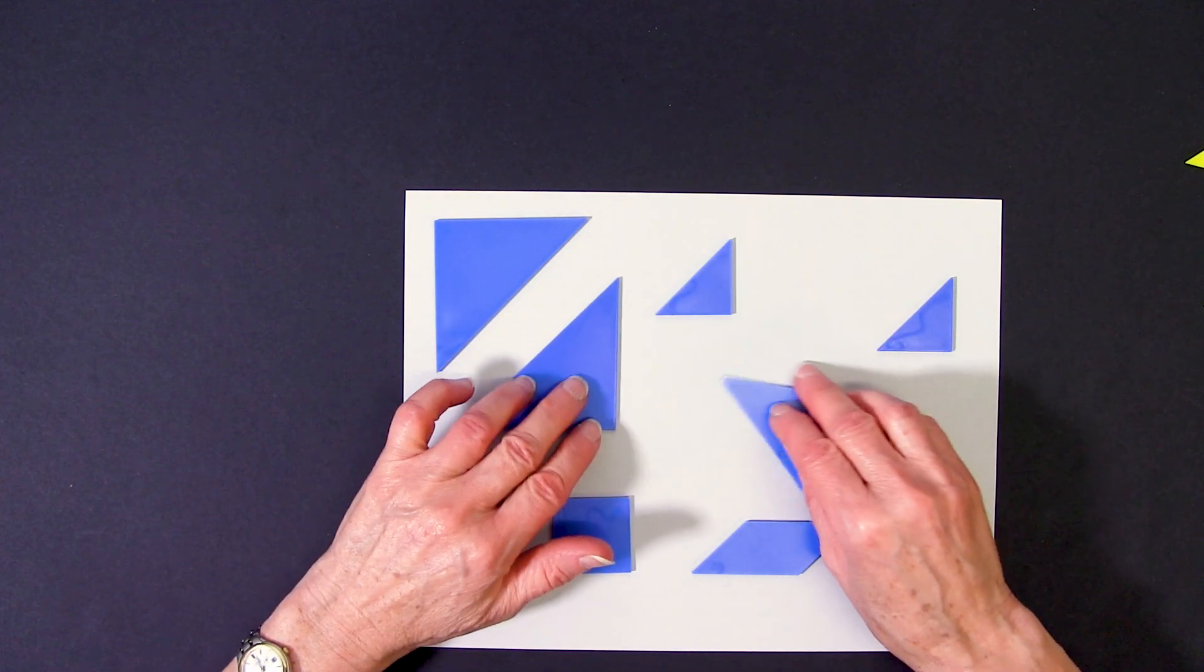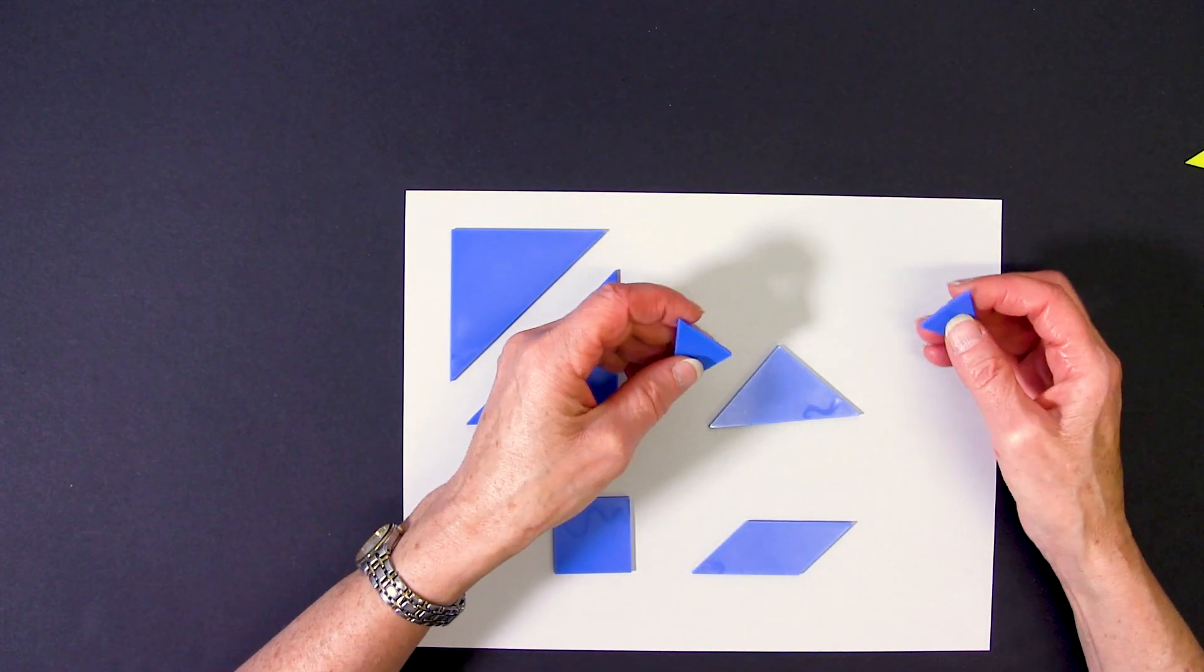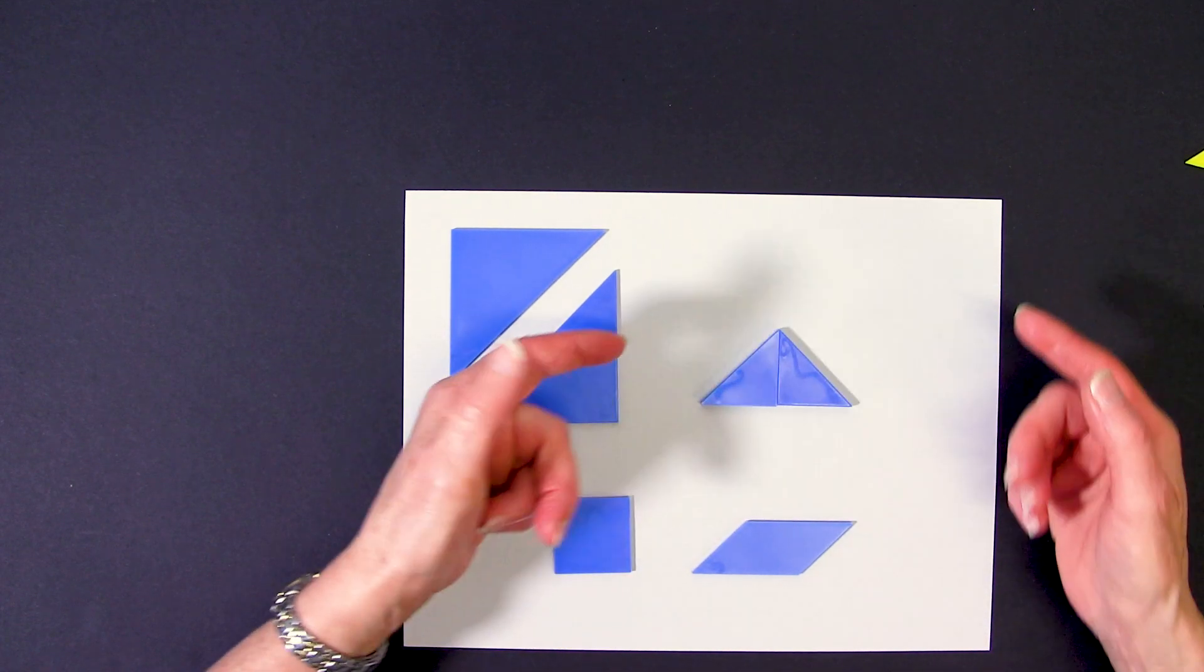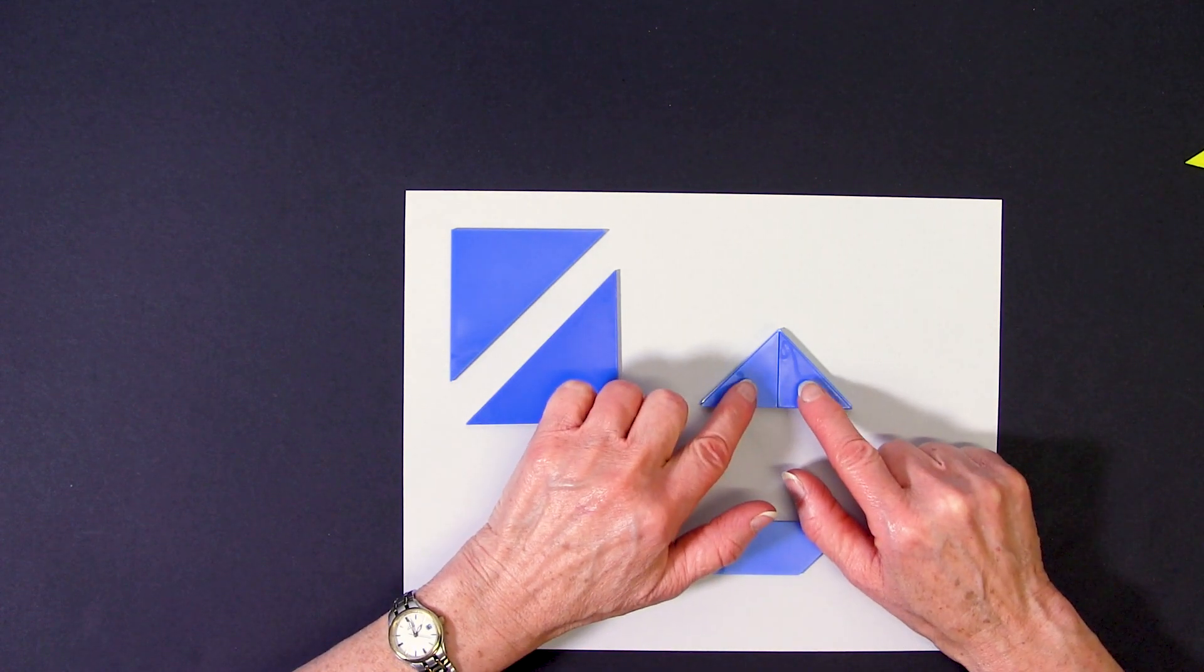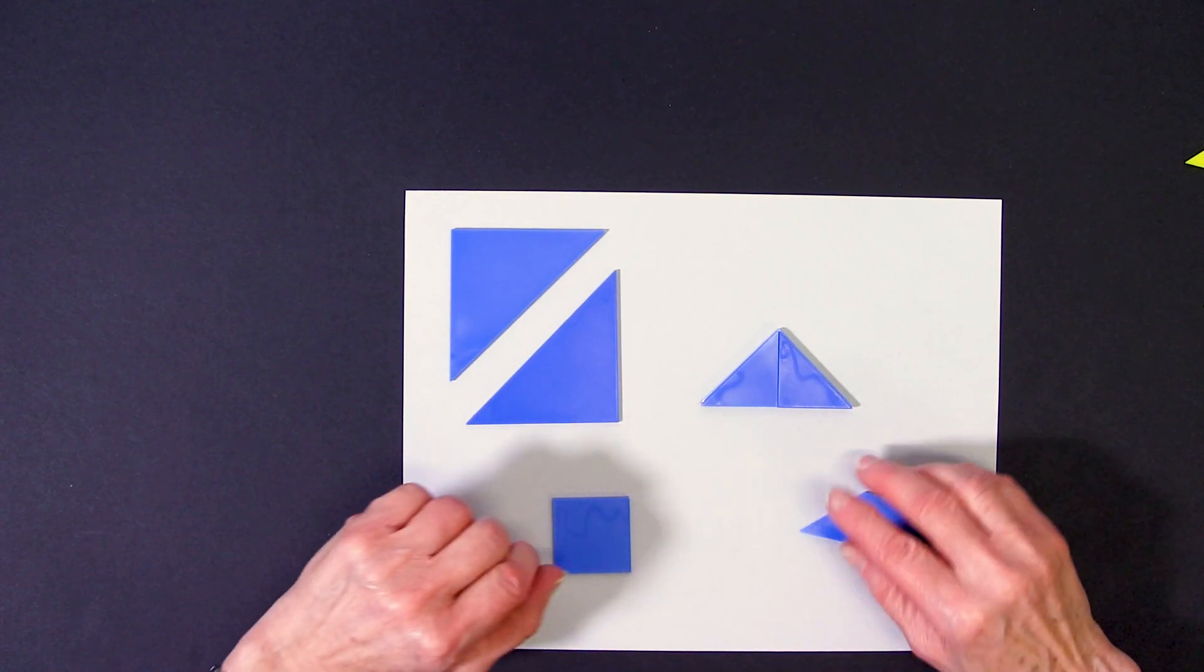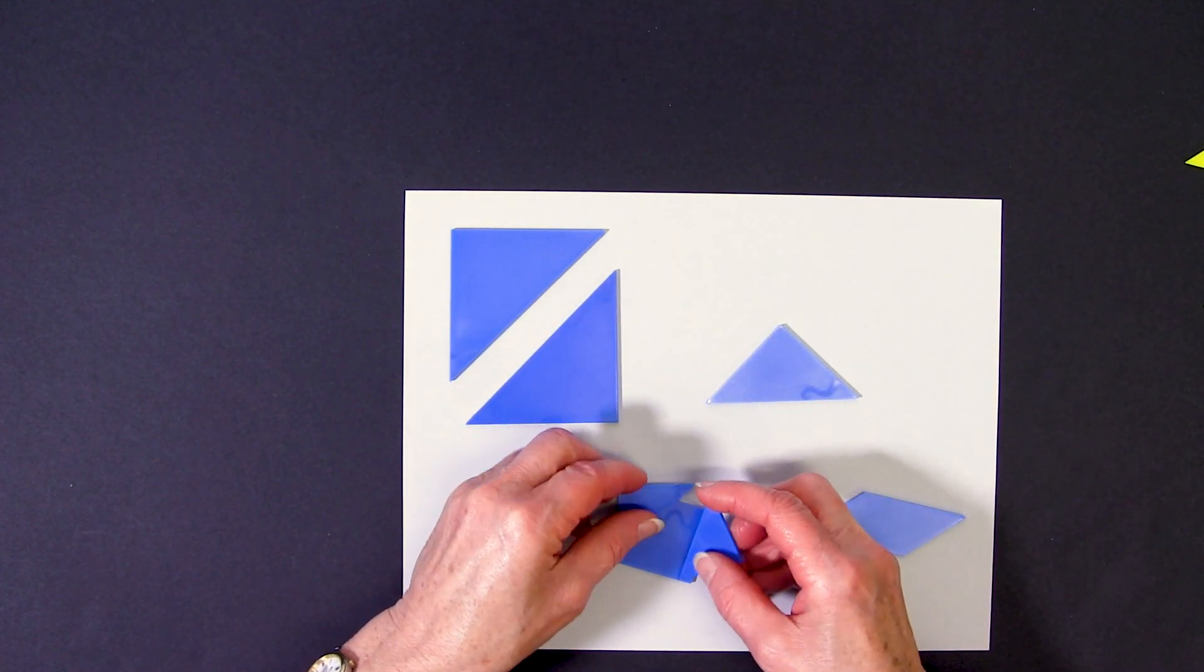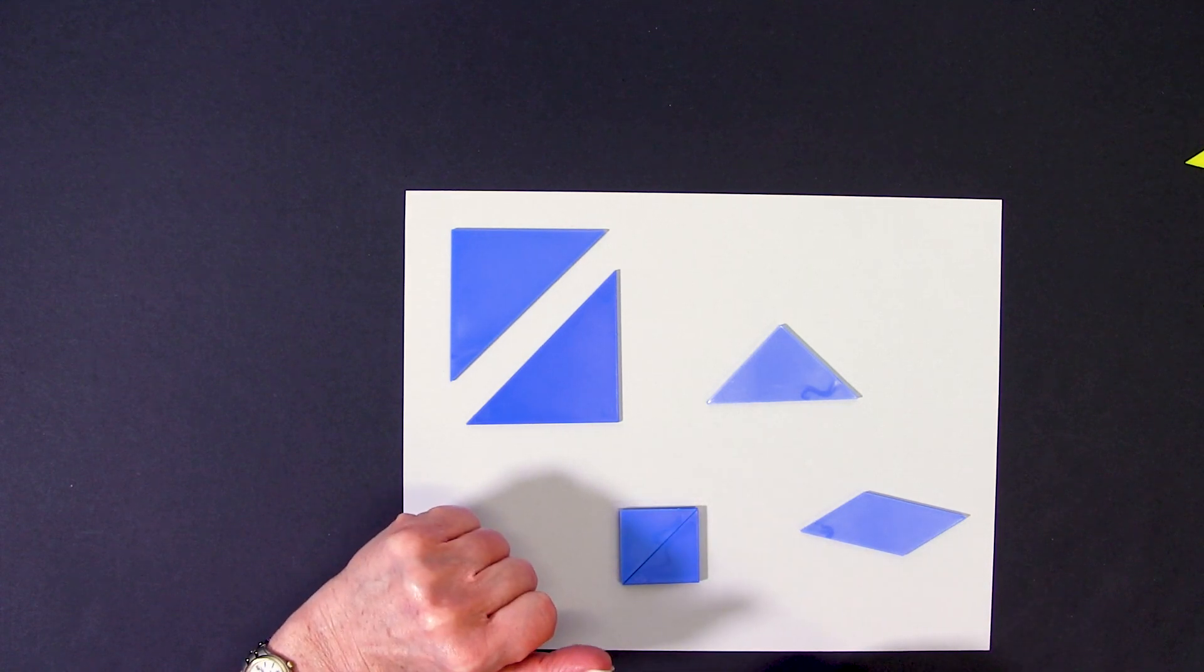When we explore with the tangram shapes, we notice that there's an interesting relationship between them. For example, I've taken the two small triangles, arranged them to form the medium triangle, but I can also take the two small triangles and arrange them a different way to form the square.